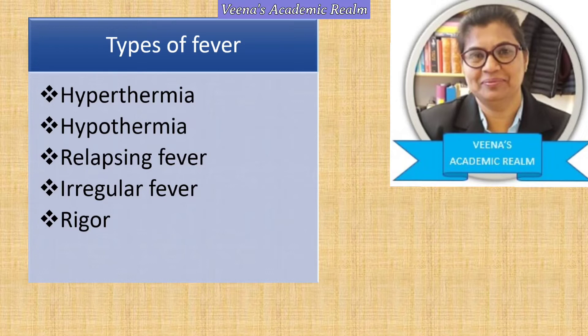Irregular fever, as the word itself says, is irregular — we cannot predict when the temperature will rise. In the morning there may be a temperature, in the afternoon there may be a temperature, and in the evening there may be normal body temperature. Rigor is a sudden severe attack of shivering — suddenly the patient is shivering and the body temperature rapidly increases, with hyperpyrexia going above 103 degrees Fahrenheit. There will be muscle twitching and shivering body movements.